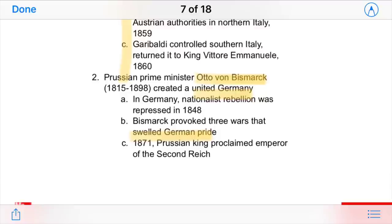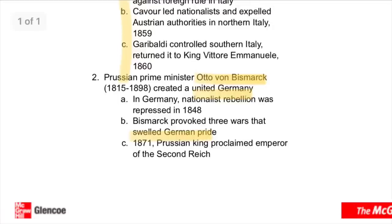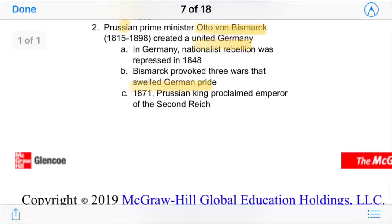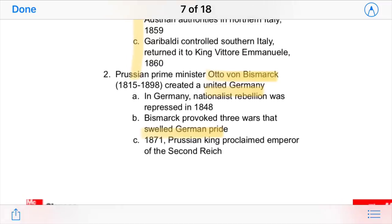In Prussia — essentially modern-day Germany — Prime Minister Otto von Bismarck created a united Germany. Nationalist rebellions had been repressed there as well, but Bismarck was able to provoke wars to swell German pride and strengthen loyalty to the state. Bismarck is a well-known leader because, in addition to uniting Germany, he instituted many reforms that influenced later world history. The Prussian king was eventually proclaimed emperor and led Germany into the 1900s.